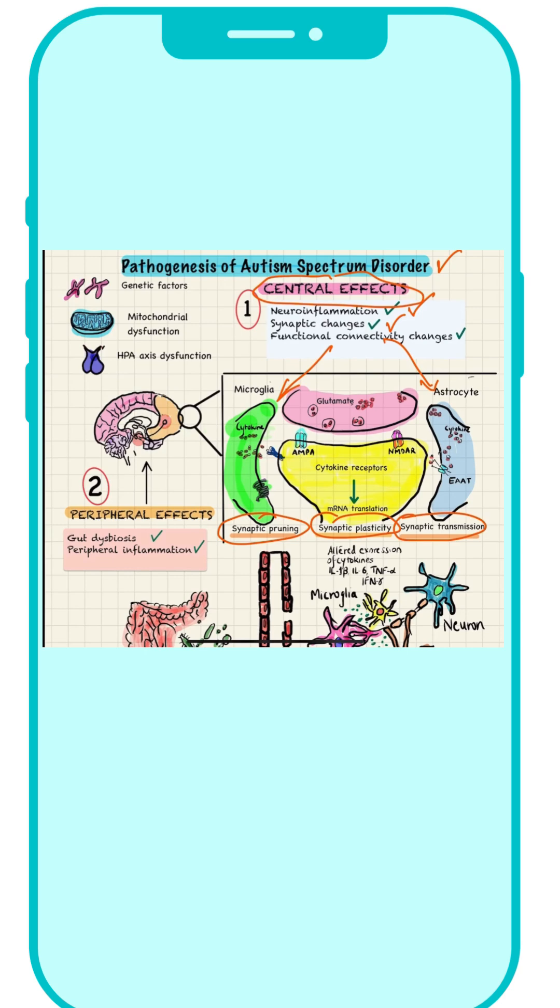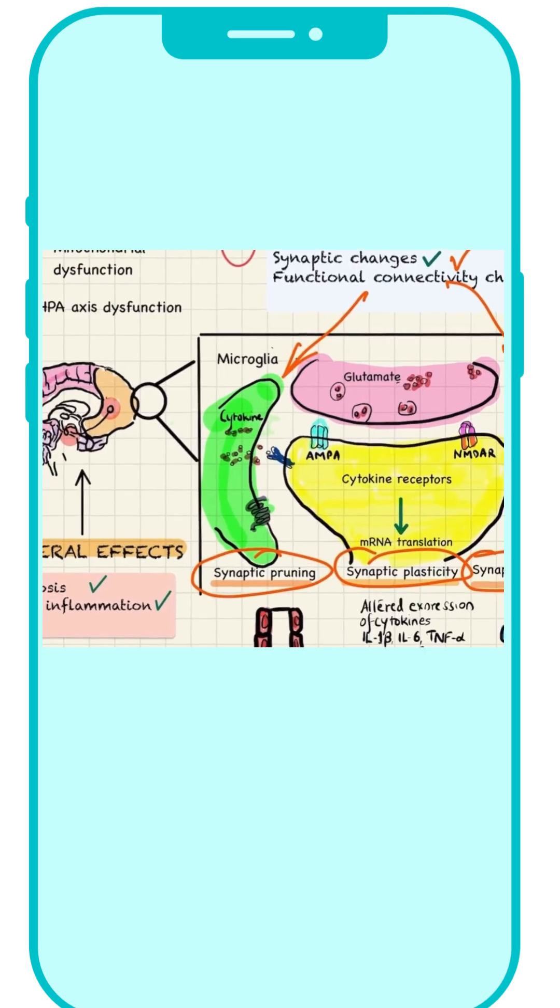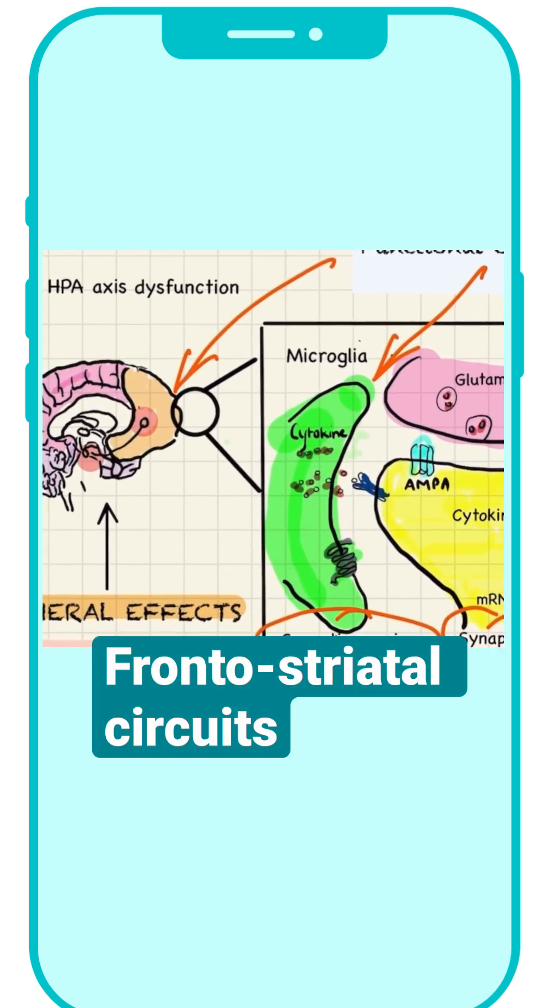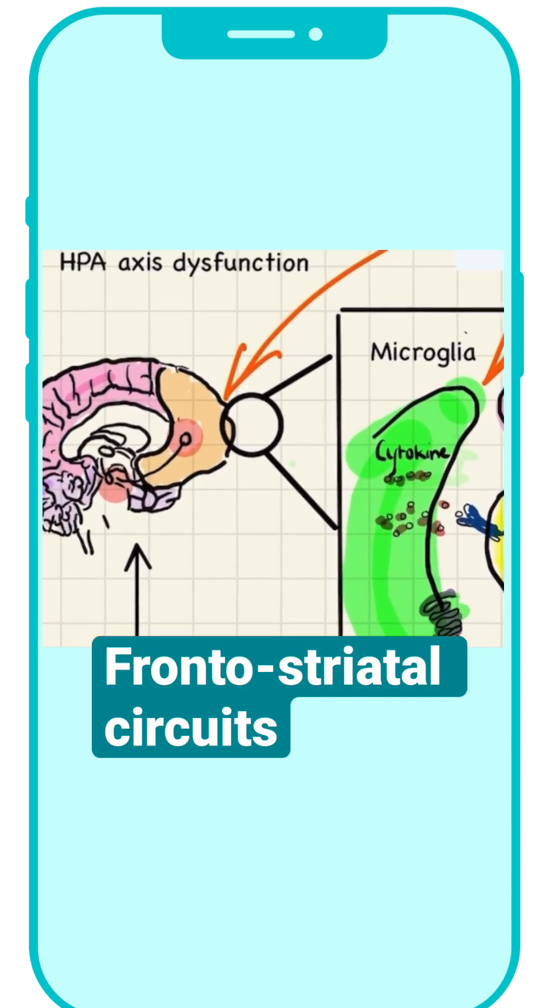and synaptic transmission, and then functional connectivity changes, which impact specific parts of the brain, mainly the frontostriatal circuits.